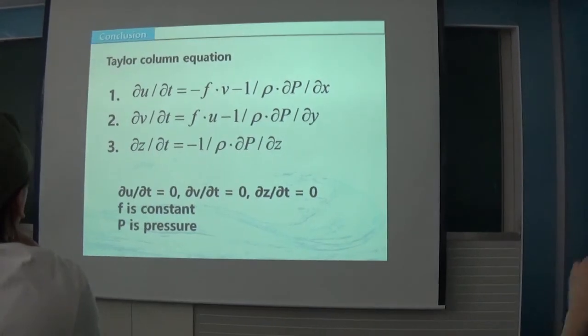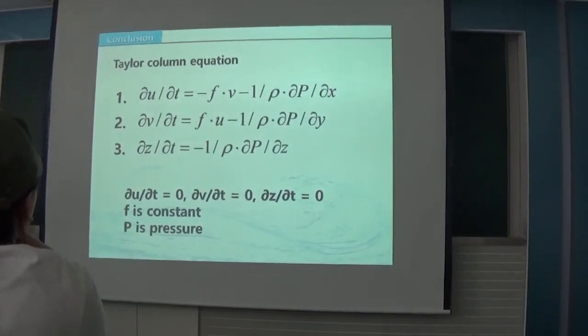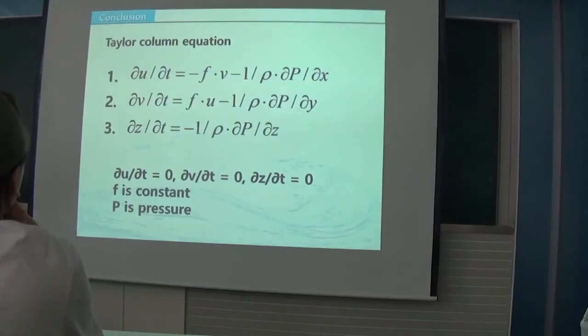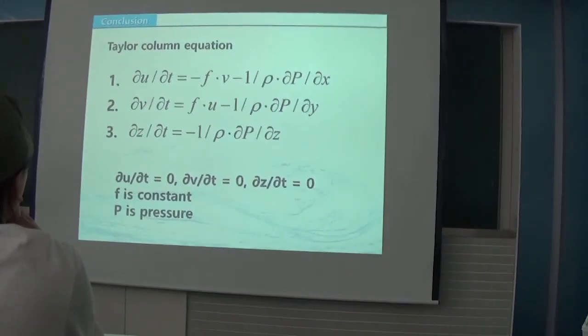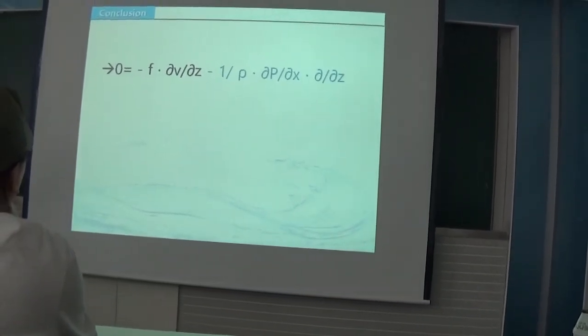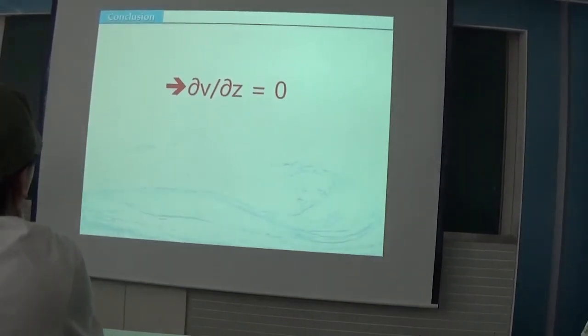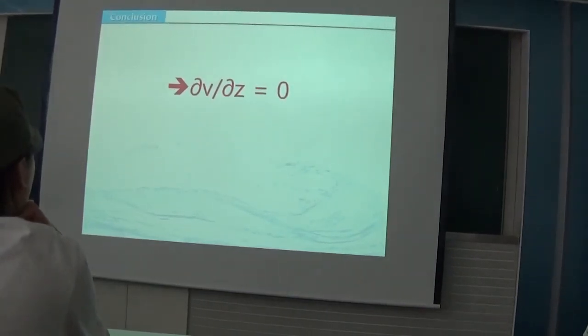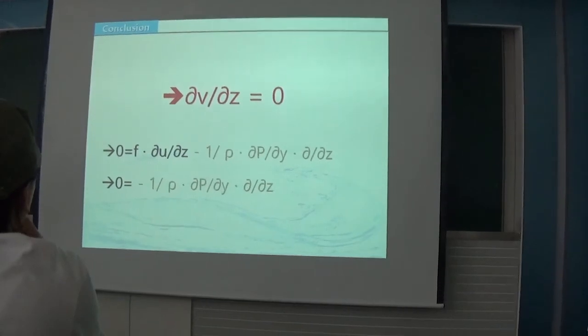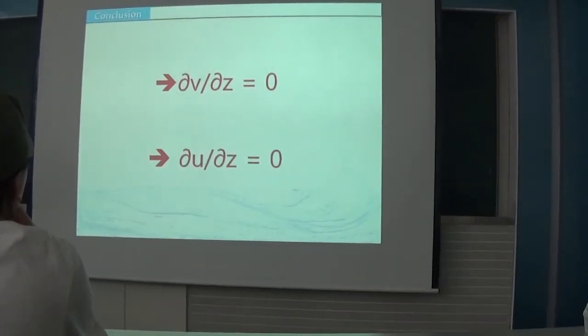Now let's understand Taylor columns using equations. du/dt and dv/dt, and dw/dt is zero. Because experimental state is supposed as steady state of motion, f is Coriolis parameter or constant, and p is pressure. First, the first equation takes the derivative with respect to z. Third, the third equation takes the derivative with respect to x. And we use linear equation technique about these two equations. And it comes out dv/dz equals zero. Do the same process with second and third equations. And it comes out du/dz equals zero.